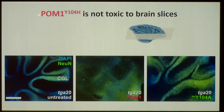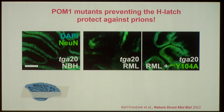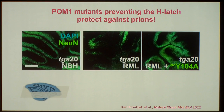What happens when you give the mutant POM1 to slices? In these cerebellar organotypic slices, you see beautifully the granule cell layer. If you give POM1, everything is destroyed within a couple of days. However, the mutant POM1 is non-toxic. And the really exciting thing: when we give Rocky Mountain Laboratory strain of mouse prions to slices, the prions destroy the slice — but in the presence of the mutant POM1, the slice is not damaged. This shows that preventing the latch conformation prevents the toxicity of bona fide infectious prions.